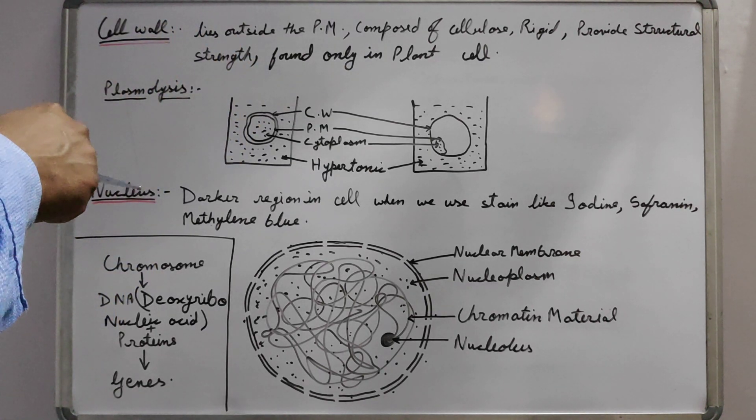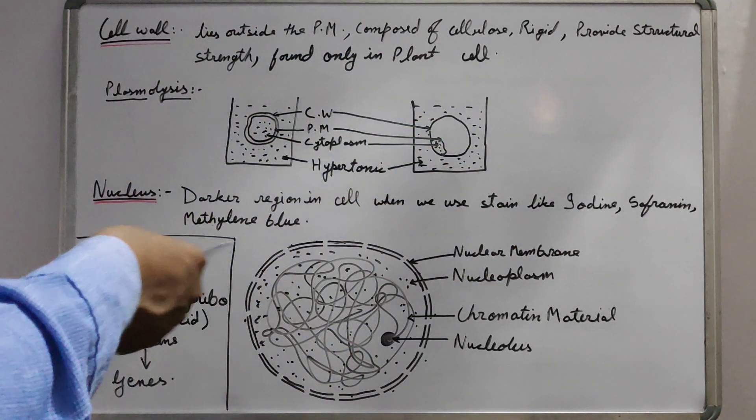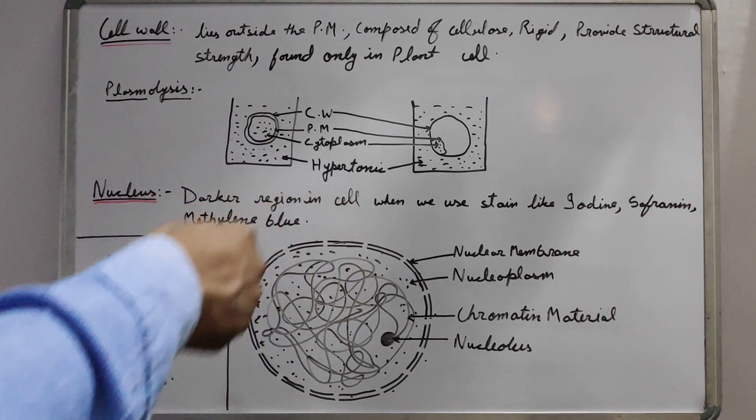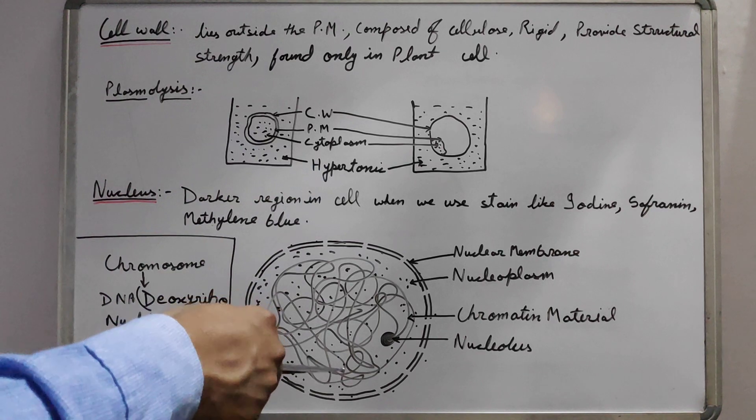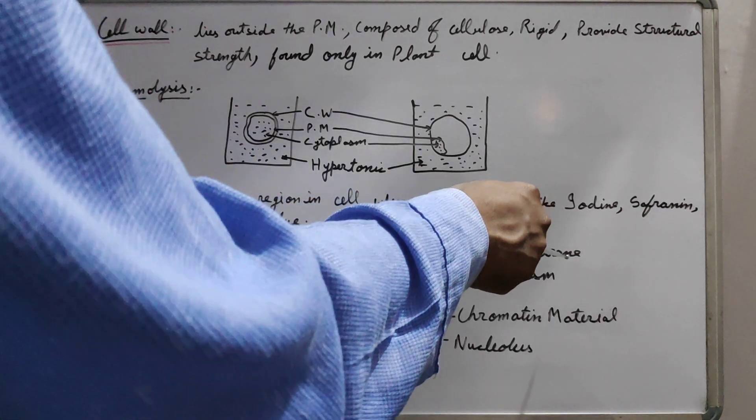If we talk about the nucleus, when we stain the cell by any stain, for example iodine, safranin or methylene blue, some darker regions can be seen and those darker regions are the nucleus. It is a spherical structure which is covered by a double membrane known as the nuclear membrane.